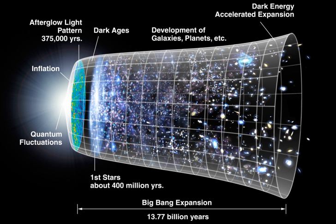The earliest and most direct observational evidence of the validity of the theory are the expansion of the universe according to Hubble's law as indicated by the redshifts of galaxies, discovery and measurement of the cosmic microwave background, and the relative abundances of light elements produced by Big Bang nucleosynthesis. More recent evidence includes observations of galaxy formation and evolution, and the distribution of large-scale cosmic structures — these are sometimes called the four pillars of the Big Bang theory. Of these features, dark matter is currently subjected to the most active laboratory investigations.